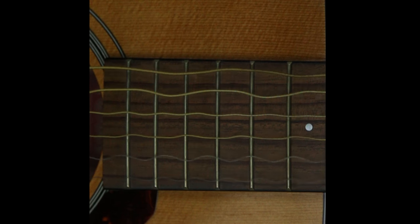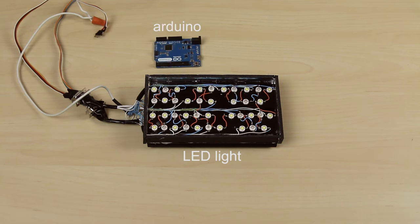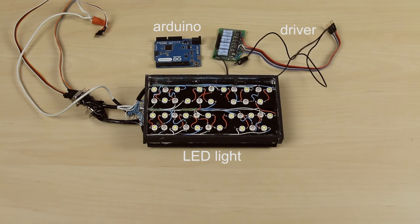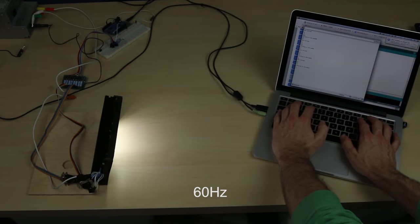But what does a vibrating guitar string actually look like? To see this, I assembled a strobe light with some parts I had laying around. A simple program then allows me to dial in any frequency on the fly. The purpose of the strobe light is to freeze time without needing an expensive high speed camera.